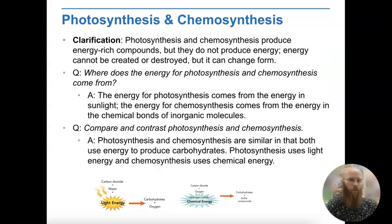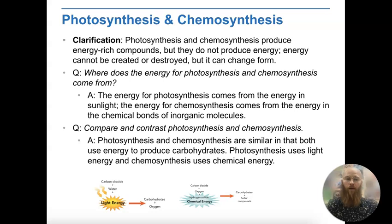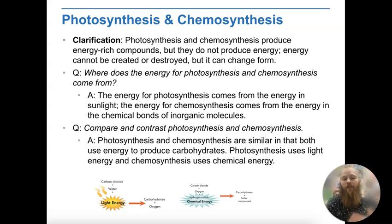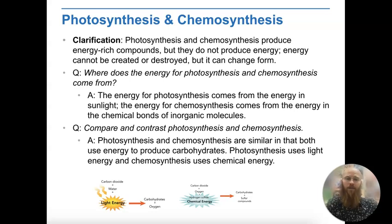A clarification: neither photosynthesis nor chemosynthesis produces new energy from scratch. We can't create or destroy energy — we can only convert it or change its form. A question to ask yourself: where does the energy for photosynthesis and chemosynthesis come from? For photosynthesis, it's the energy in sunlight — that light energy. For chemosynthesis, it comes from the chemical bonds, specifically the breaking of those chemical bonds in inorganic molecules from the surrounding environment.